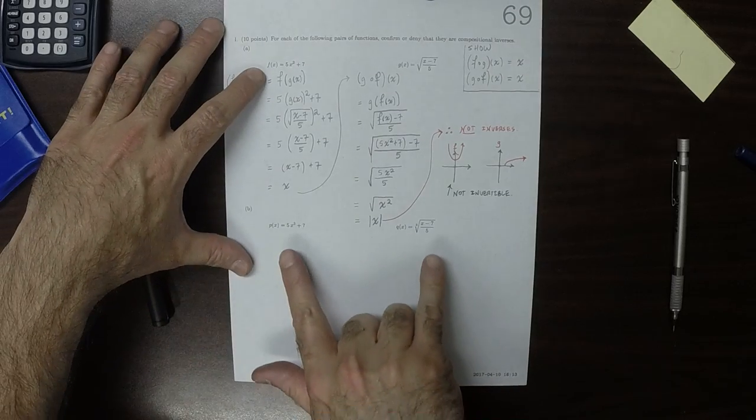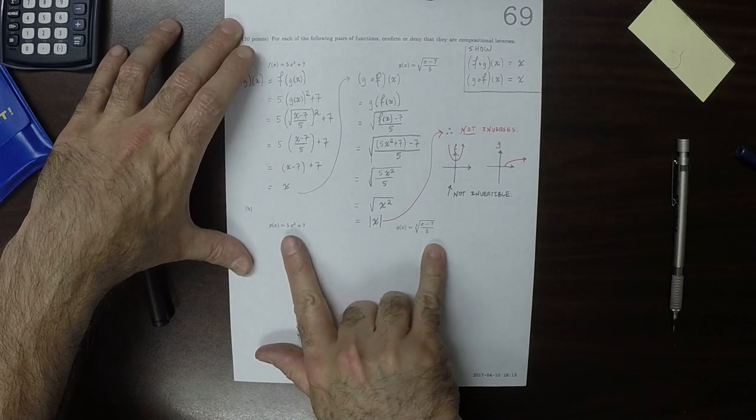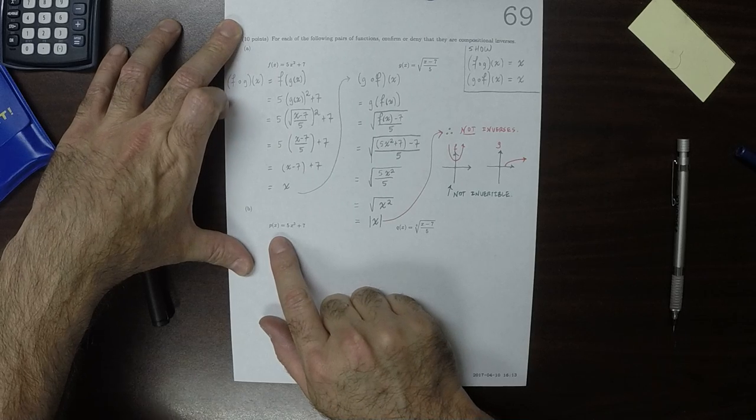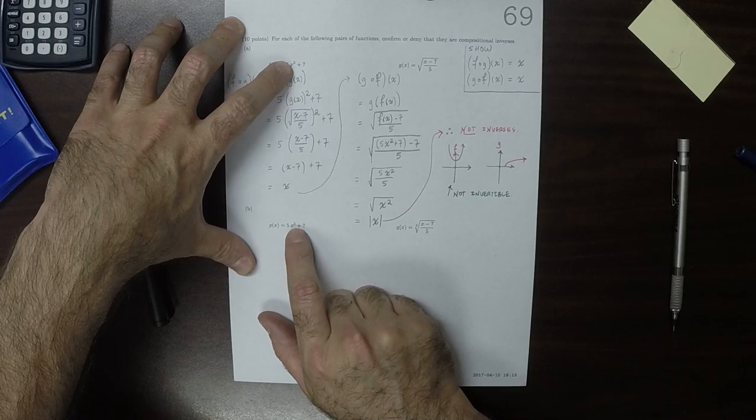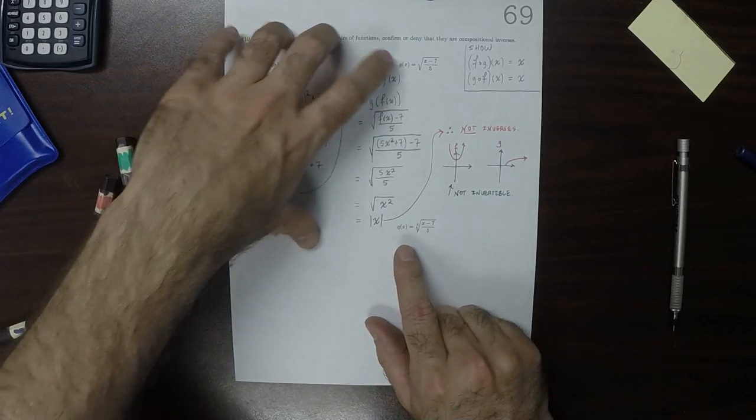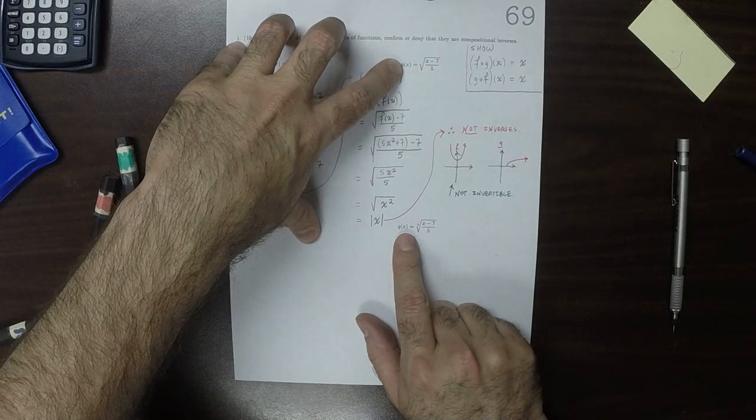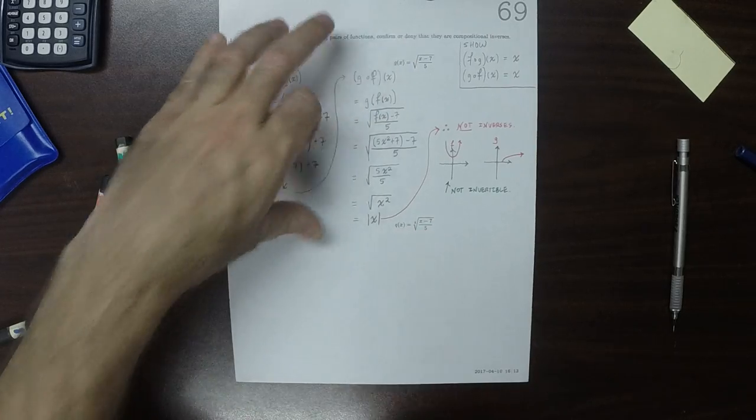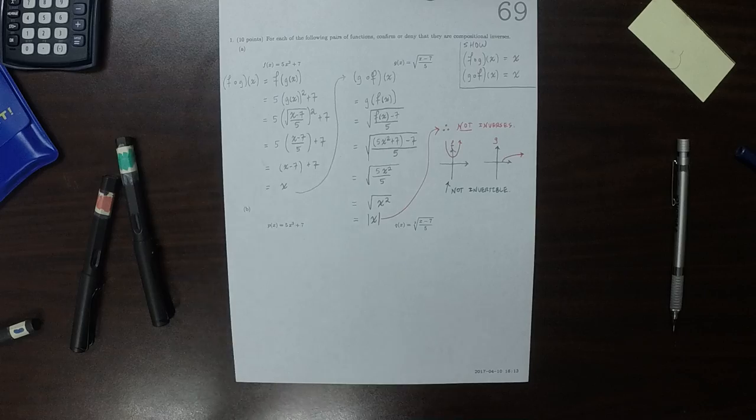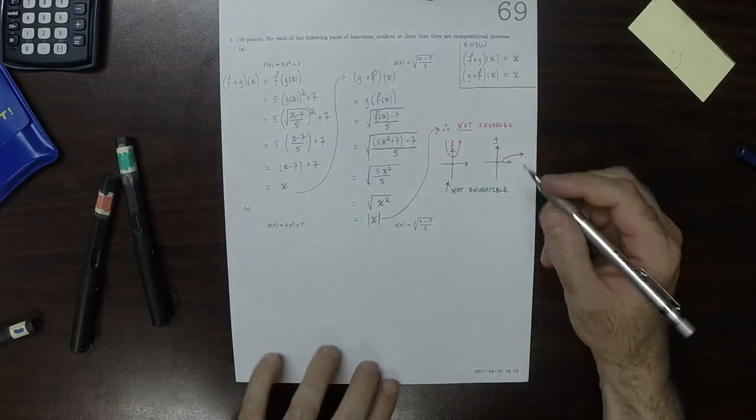Now notably in this exercise, p and f are identical with the exception that the exponent is 3. And g and q are identical with the exception that g's radical number is 2 and q's radical number is 3. But that's enough to completely change the behavior, because